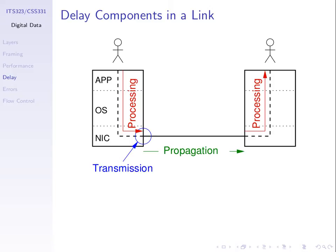A fourth component arises when we have multiple links. If we transmit across one link to an intermediate device, which then transmits across a second link to the destination, there may be queuing delay — the time spent waiting in a queue at the intermediate device for its turn to be sent. We'll focus on the first three types for now and return to queuing delay in later topics.